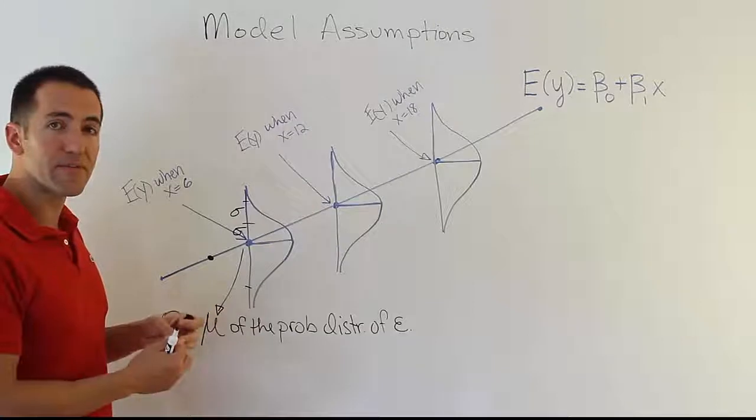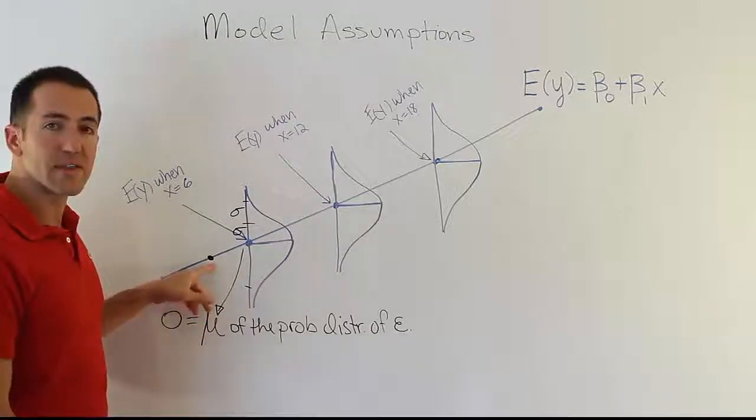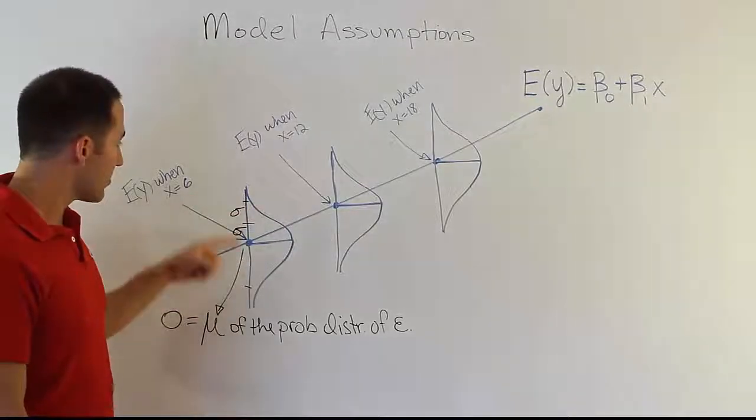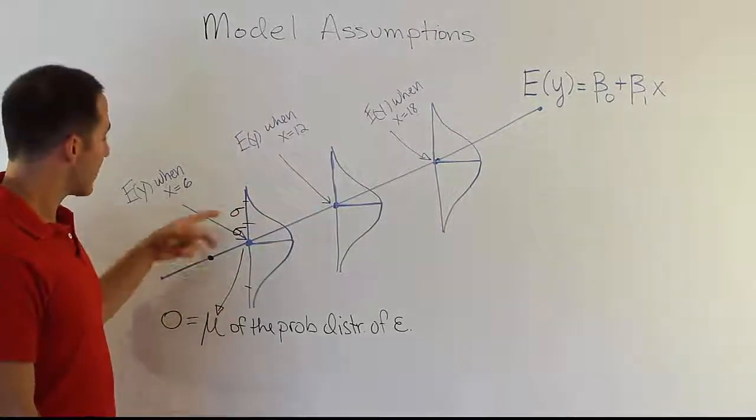So an actual value in the real world is probably not going to be precisely on the line. But it might be a little bit above, a little bit below, et cetera. But again, it'll have the same bell-shaped curve. It'll have a constant standard deviation.